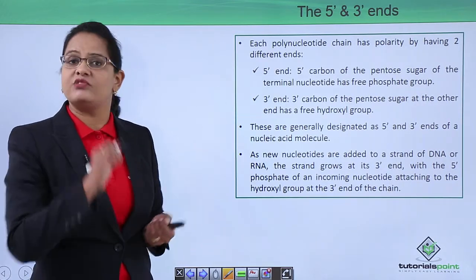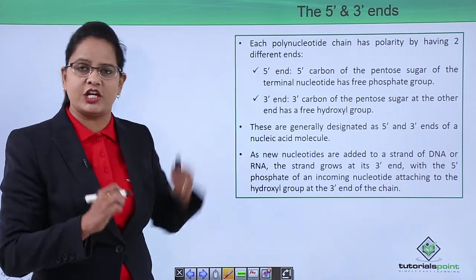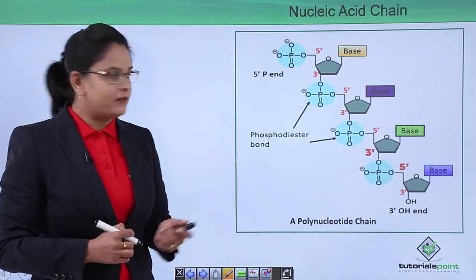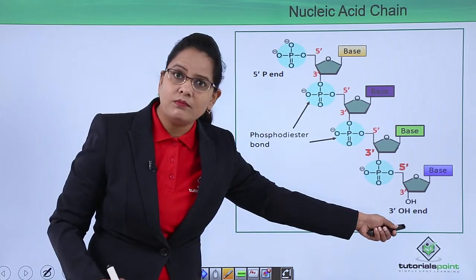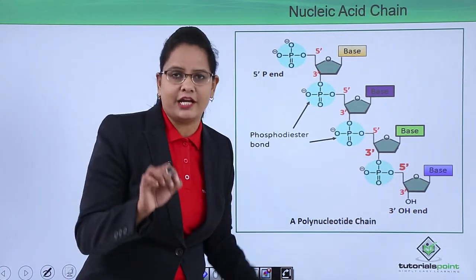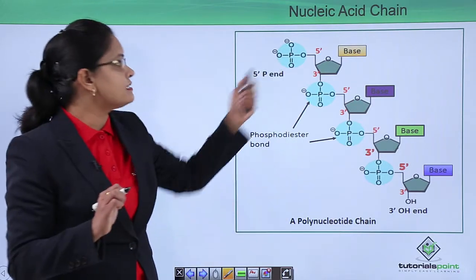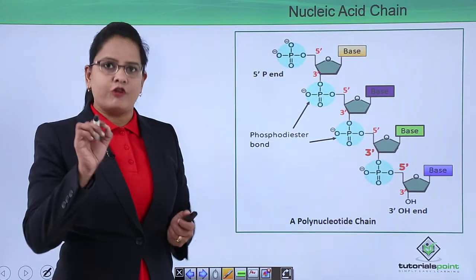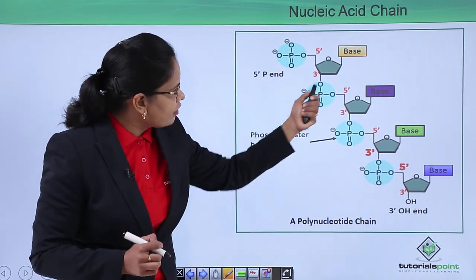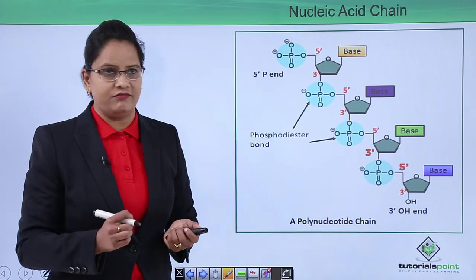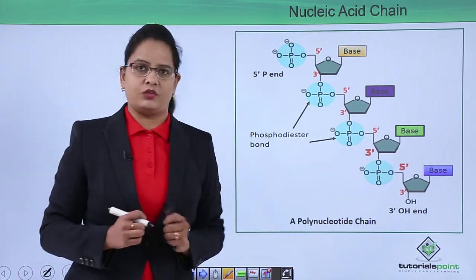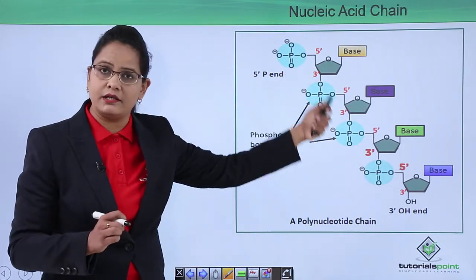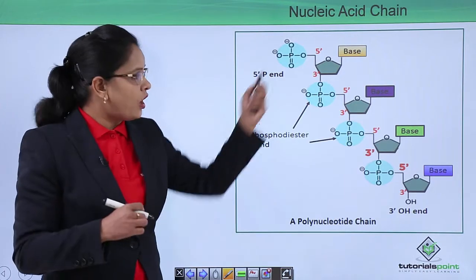This nucleic acid chain shows very clearly a three prime OH which has a free hydroxyl group, and a free five prime phosphate which has a free phosphate group. The sugar, phosphate, sugar, phosphate, sugar, phosphate units are alternatively arranged from five prime to three prime, and the bases are different. Clearly you can see the sugar-phosphate units are the same, but the bases differ.